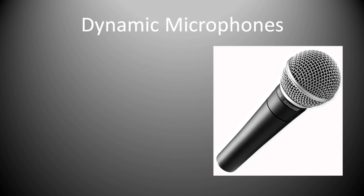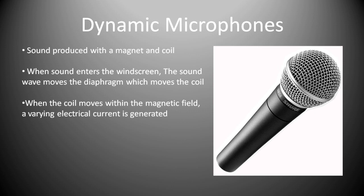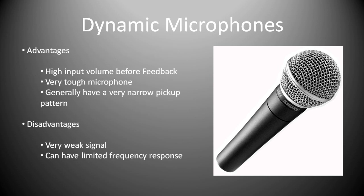The first one we're looking at are dynamic microphones. I'm sure plenty of you will recognize this one — it's the trusty old Shure SM58. With dynamic microphones, the sound is produced with a magnet and a coil. When the sound enters the windscreen of the microphone, the sound waves move the diaphragm, which moves the coil. When the coil moves within the magnetic field, a varying electrical current is generated, and this is what's turned into your audio signal.